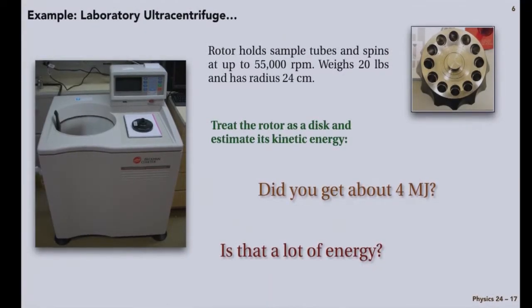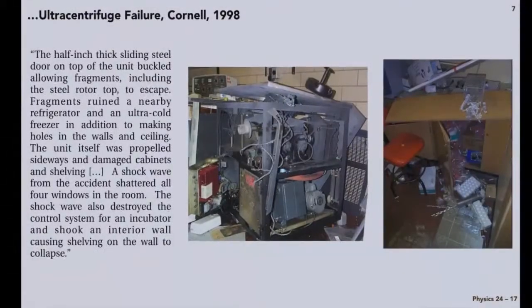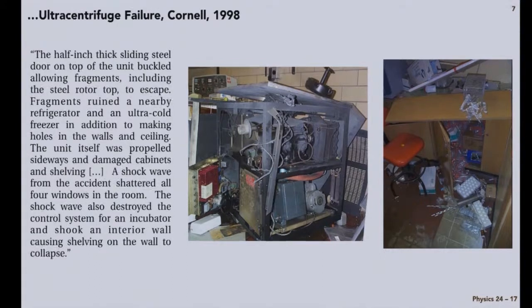Let's see what happens when a part fails and you're spinning this fast. So, this was an ultra-centrifuge failure at Cornell University in 1998. And the half-inch thick sliding steel door on the top of the unit buckled when it was smacked, allowing fragments, including the steel rotor top, to escape. Fragments ruined a nearby refrigerator and an ultra-cold freezer, in addition to making holes in the walls and ceiling. The unit itself was propelled sideways and damaged cabinets and shelving, and a shockwave from the accident shattered all four windows in the room. The shockwave also destroyed the control system for an incubator and took an interior wall, causing shelving on the wall to collapse.